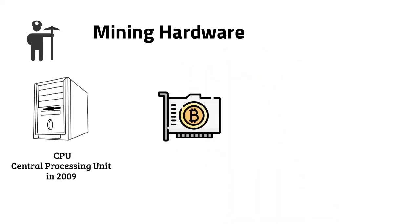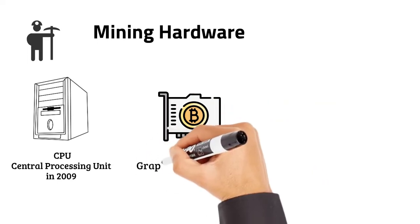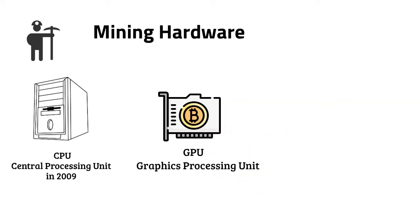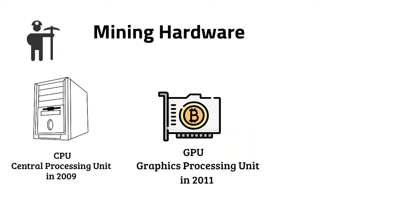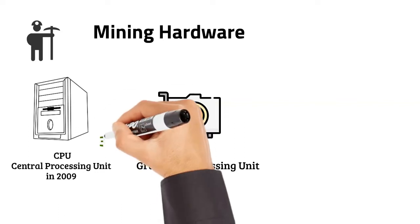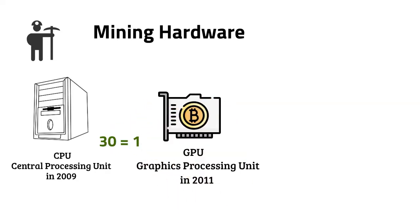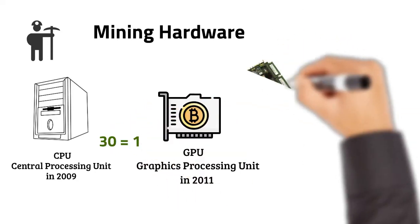As bitcoin started to catch on, people looked for more powerful mining solutions. Gradually, people moved to GPU mining. A GPU, or graphics processing unit, is a special component added to computers to carry out more complex calculations. GPUs were originally intended to allow gamers to run computer games with intense graphics requirements. Because of their architecture, they became popular in the field of cryptography, and around 2011 people also started using them to mine bitcoins. For reference, the mining power of one GPU equals that of around 30 CPUs.